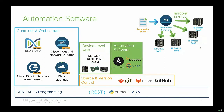Automation software is another piece of the puzzle. Examples include Ansible, Puppet, and Chef, where you can leverage automation tasks. For example, you can configure an automation task once — defining which switches in your network need a configuration change — send it to your automation software, and via NETCONF, SSH, or CLI if supported, get those network changes deployed. This is another tool you can leverage today.